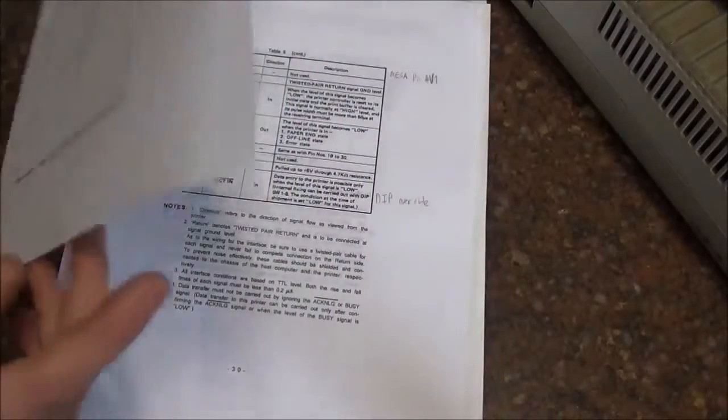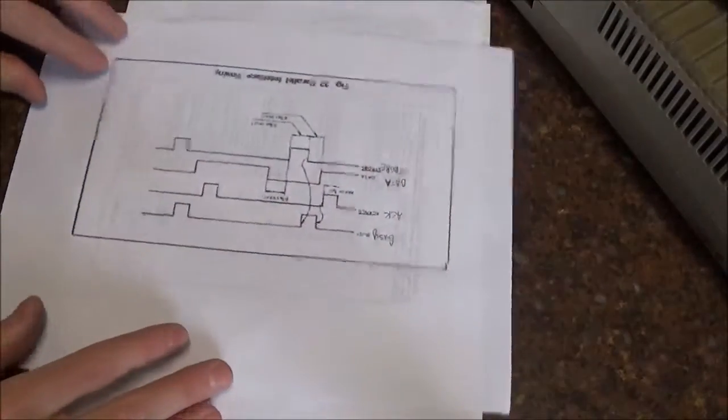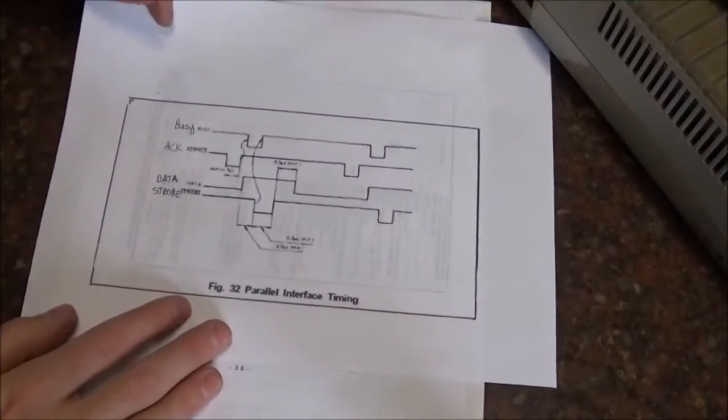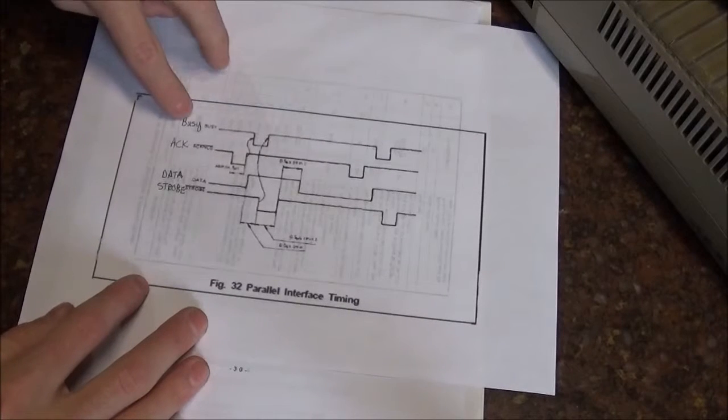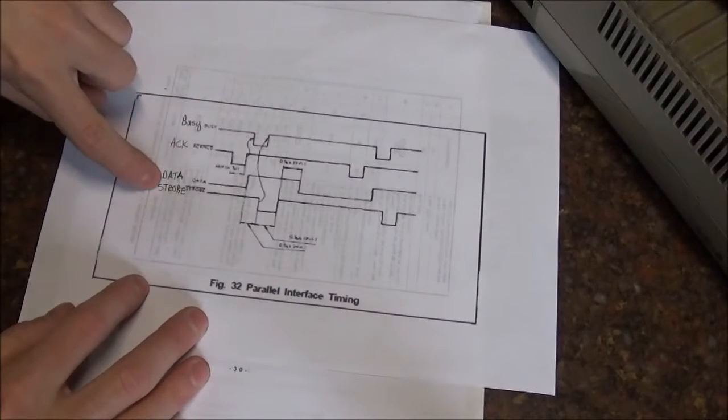This is where the timing diagram comes in. I've got a blown up version here, oops that's upside down. Very bad quality, I apologize, but it's an old PDF. So we have basically here the busy, the acknowledge, the data and the strobe.